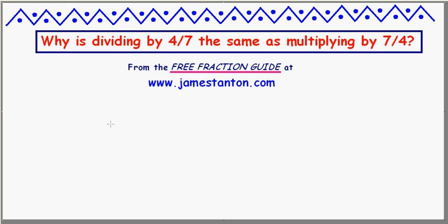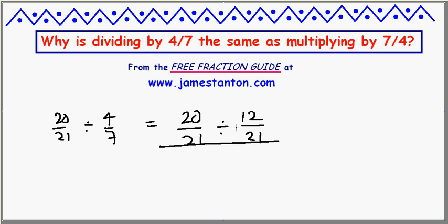Here's homework question number two. Some teachers have kids perform division of fractions as follows. If they want to work out twenty-twenty-firsts divided by four-sevenths, they say, put these fractions over a common denominator. Alright, twenty-firsts and sevenths. I guess I need to modify this latter guy. Also, I'll keep twenty-firsts on the bottom, but instead of four-sevenths, I'm now going to do twelve-twenty-firsts.